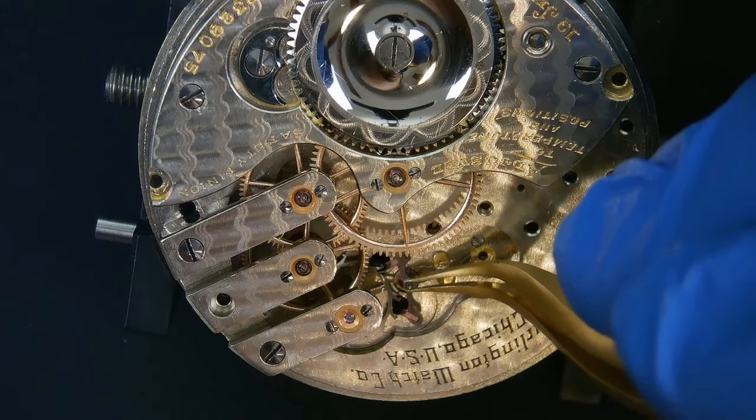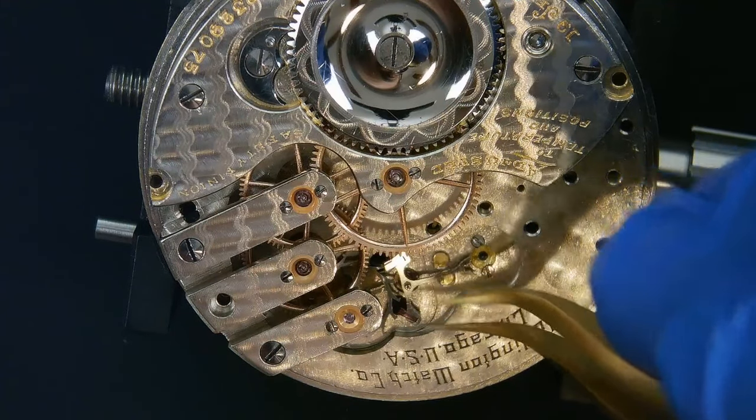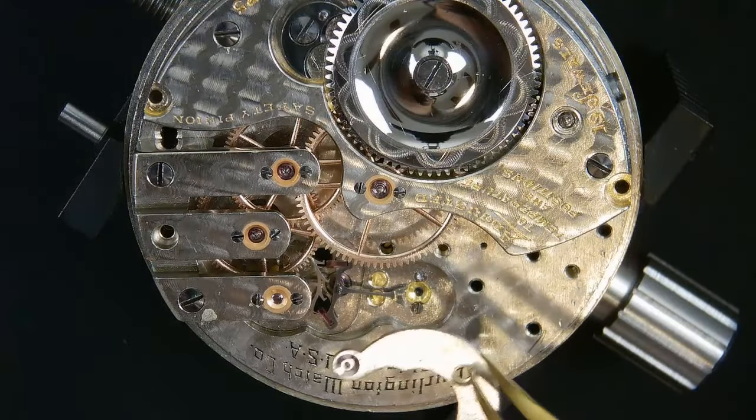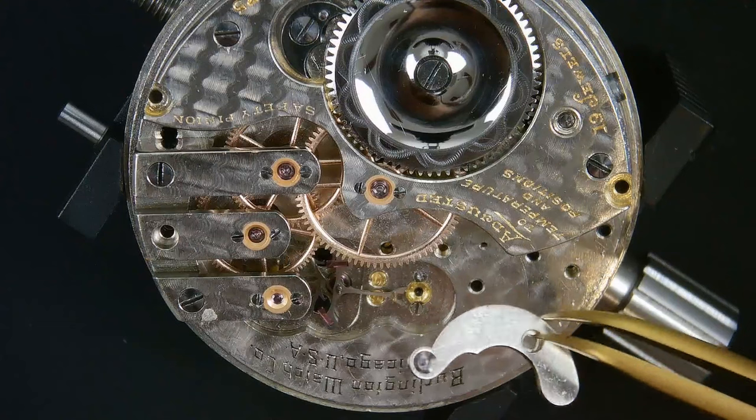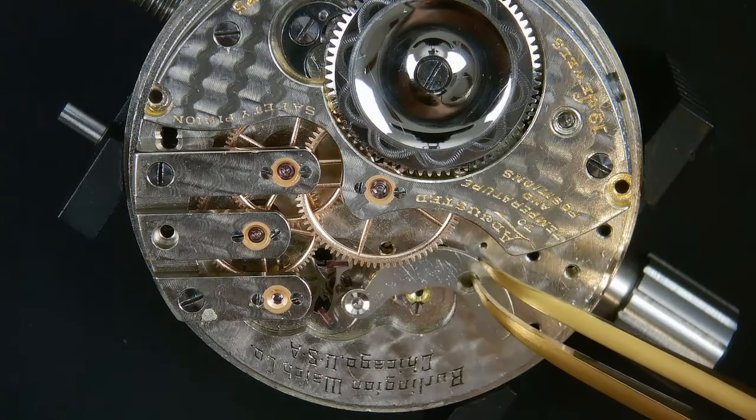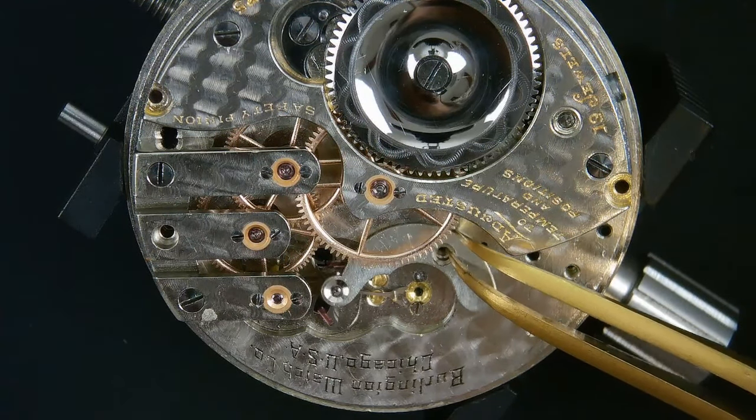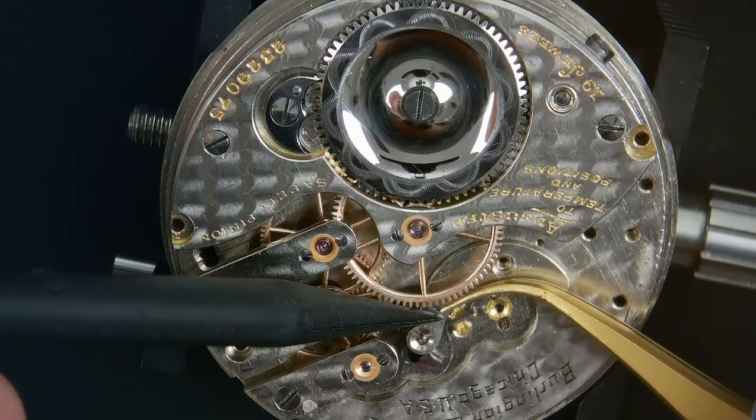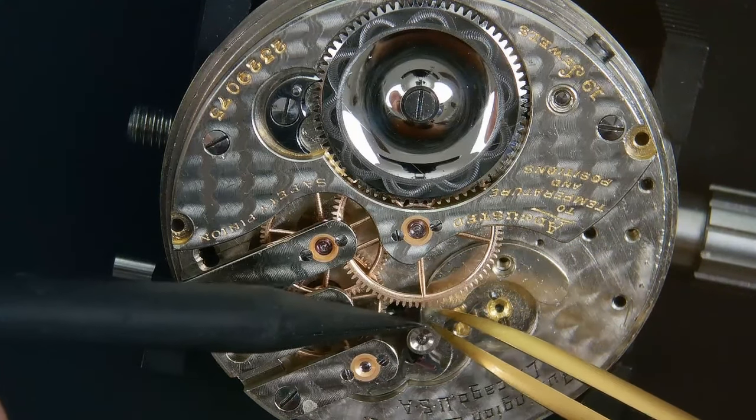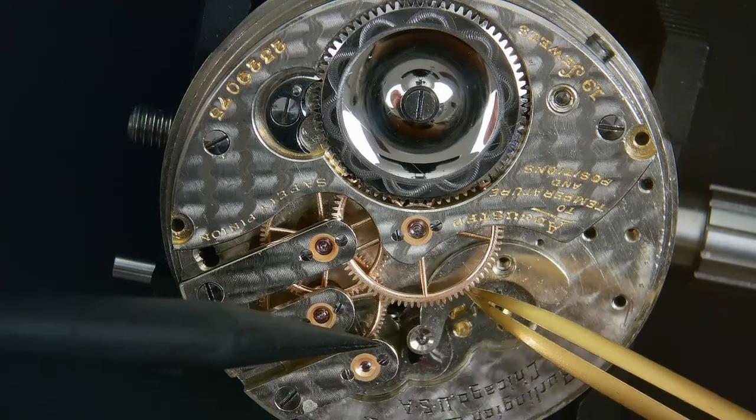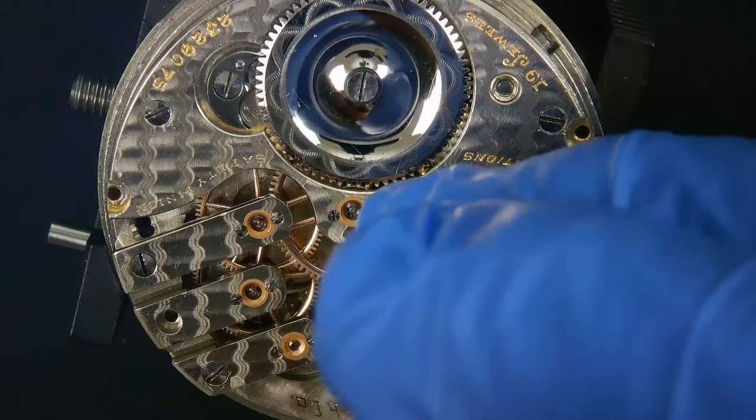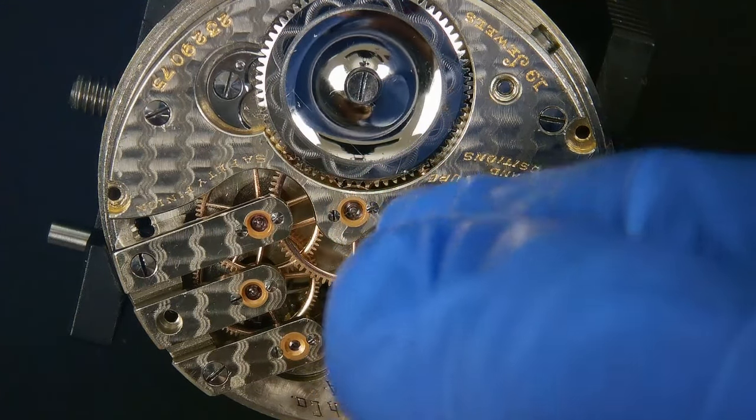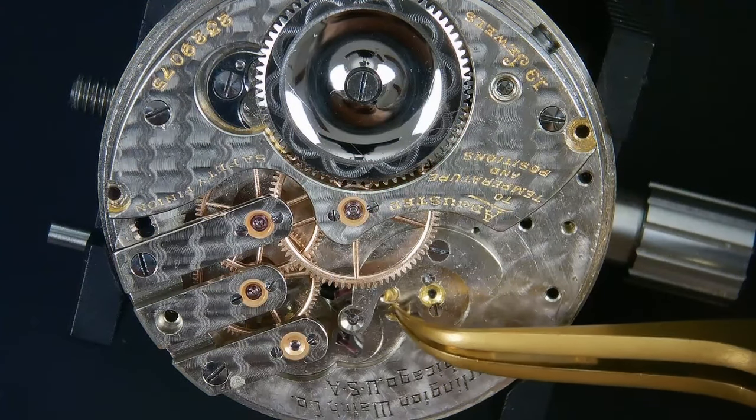Lowering the pallet fork into position. And now its bridge. And I'm being really gentle with the pressure here because these pivots are so delicate. And now that they're lined up, let's screw the bridge down.